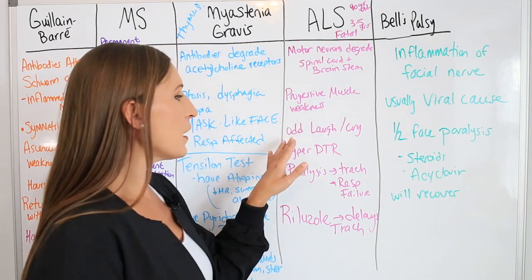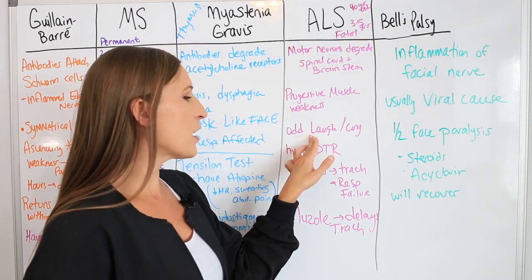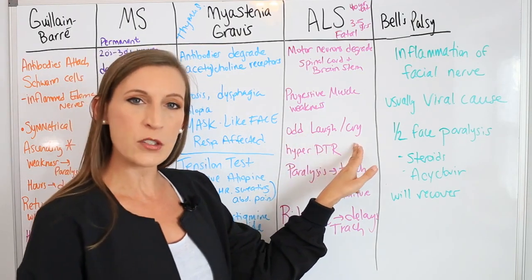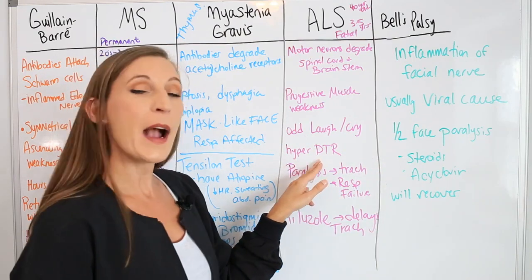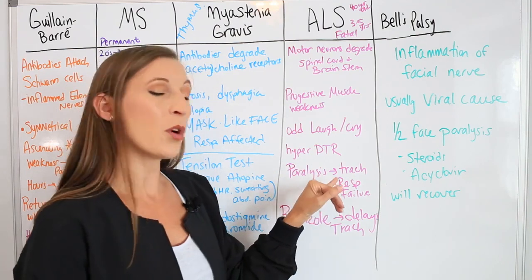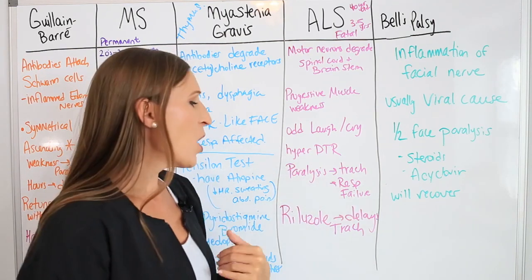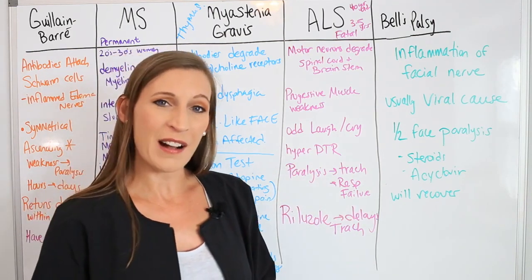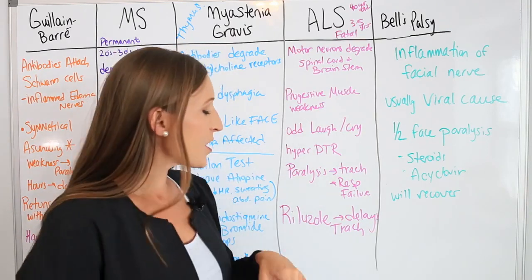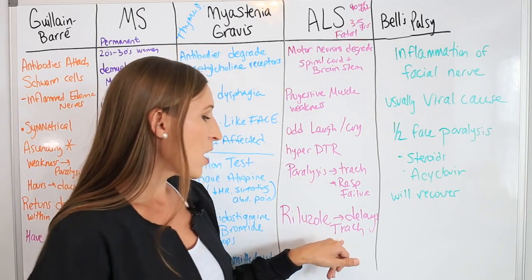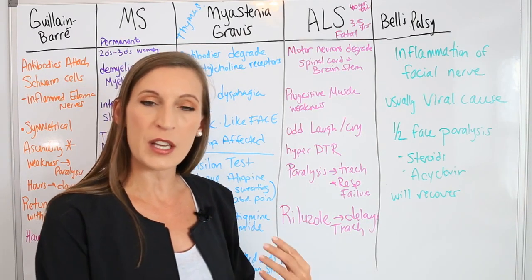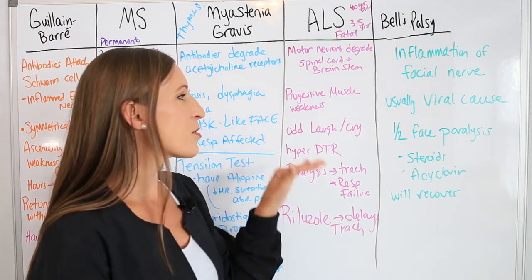As the motor neurons in the spinal cord and brain degrade, they eventually affect the respiratory center, hence the need for a tracheostomy. Patients also have odd or inappropriate periods of laughter and crying, and hyperactive deep tendon reflexes. We want to delay the tracheostomy as long as possible to prolong life. We give riluzole, which delays the trach and slows the progression of the disease.